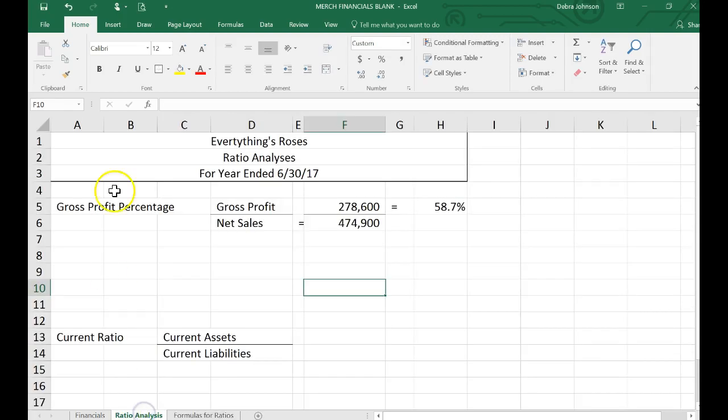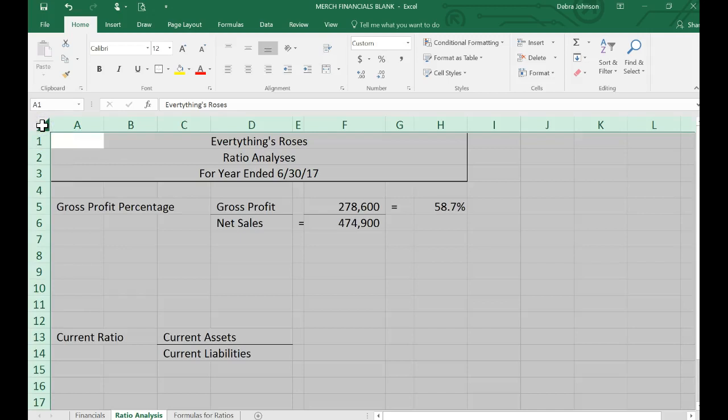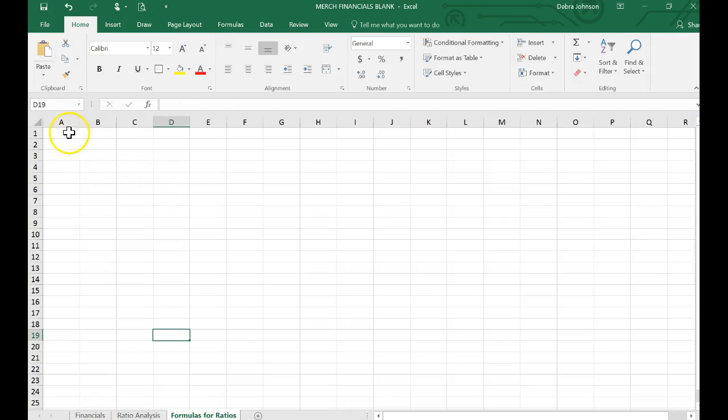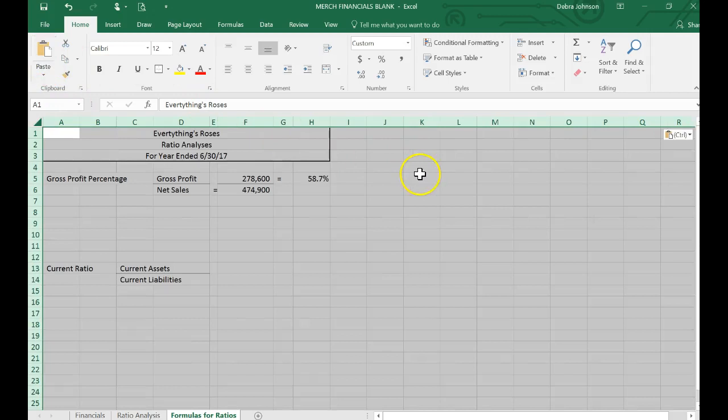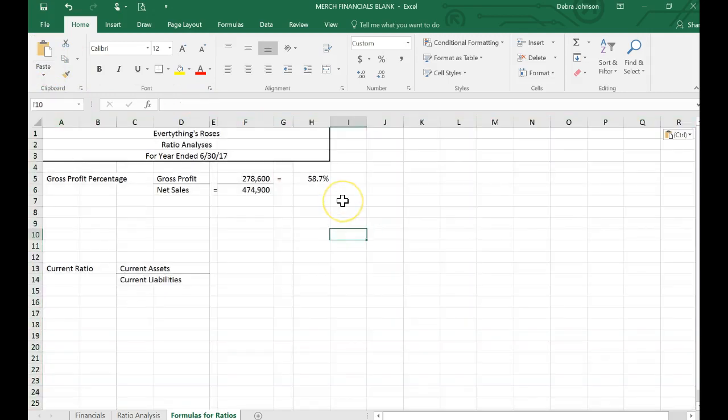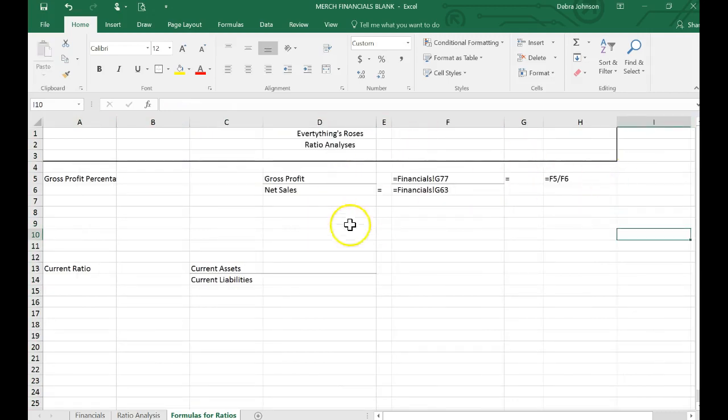And then go back to your data, hit the select all button here, copy, go to your new page and paste. And then here's all the information that we copied. Then using the control tilde button, it turns it into formulas and this is what I want to see.